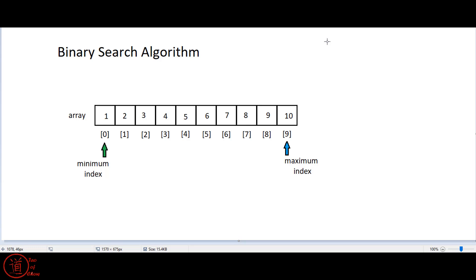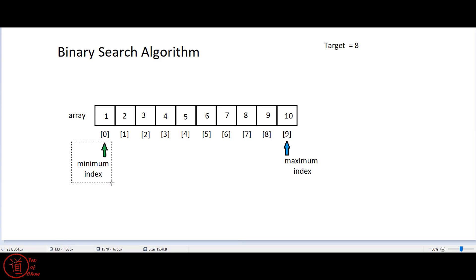So this is how it works. I'll demonstrate and then talk about the coding afterwards. Let's say we have a target we're looking for — let's say my target is 8, the number 8, not element 8. I have my minimum index, which is an integer pointing at the lower bound of the search area, and my maximum index points at the upper bound of the search area.